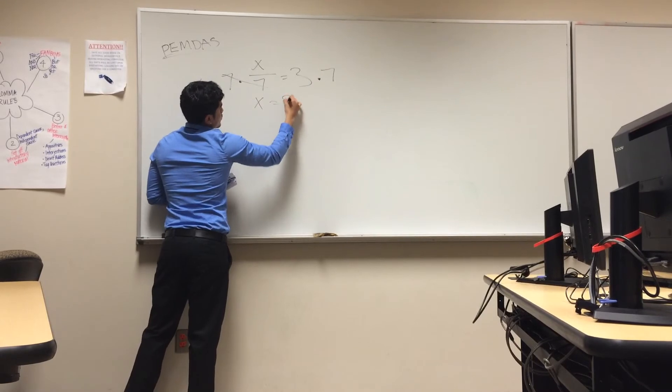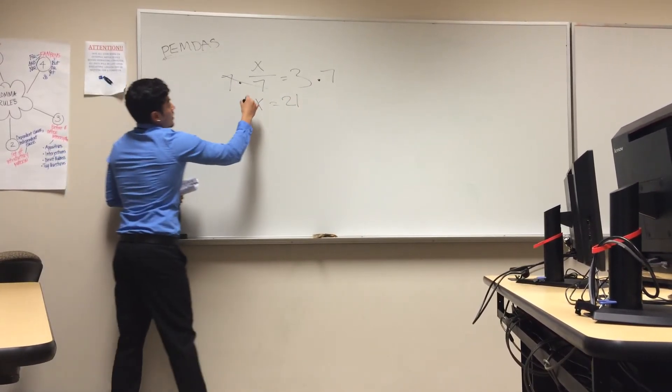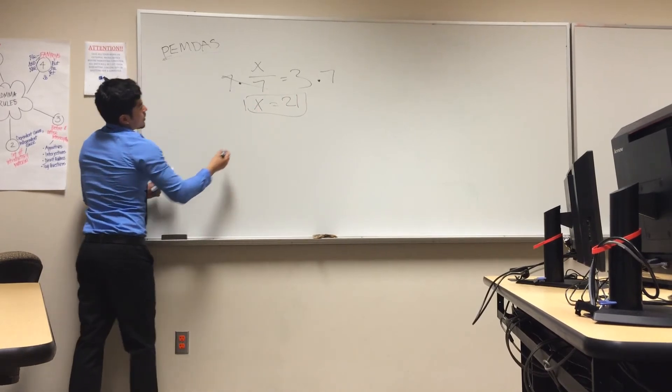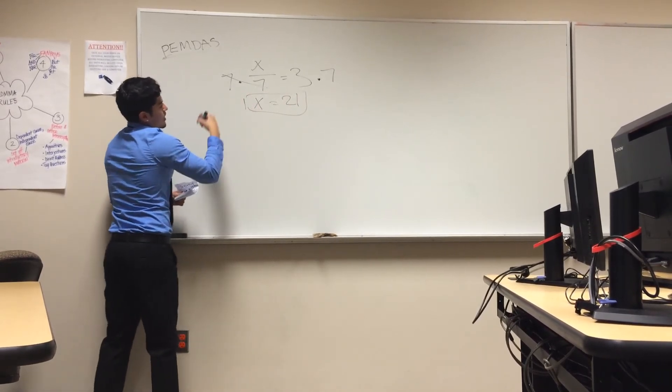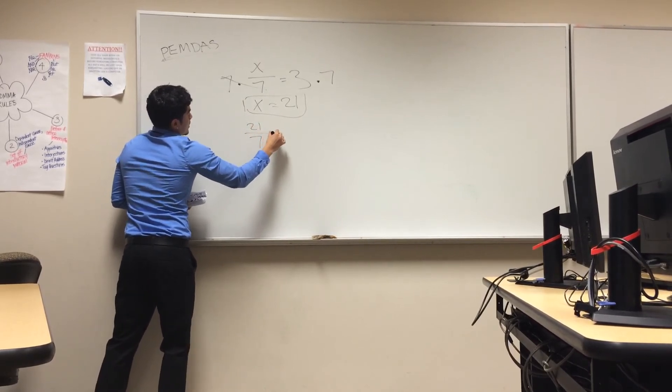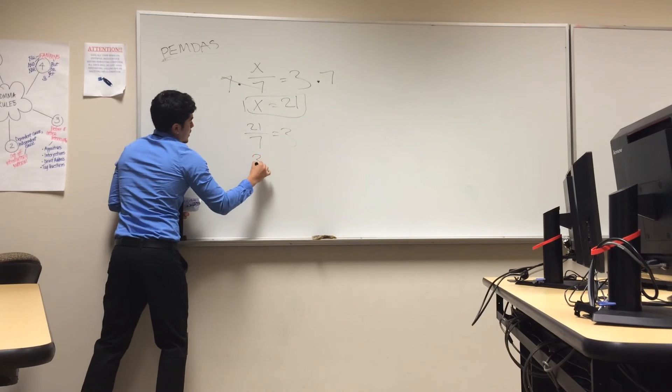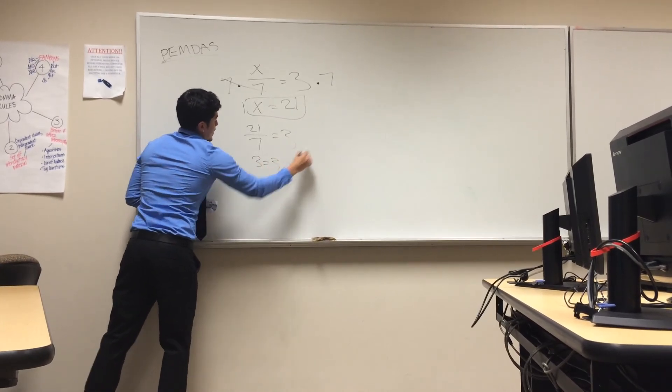Now, 7 times 3 is 21. And, that's the answer. To check this, you can always plug in again like we did in the recent problem. 21 divided by 7 would be 3. So, that's how you got it right.